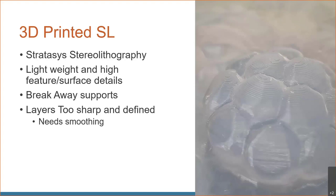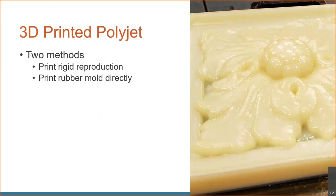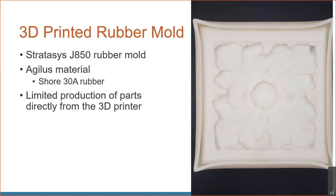For our third option, PolyJet printers offer two different approaches. We can either print a rigid master pattern to cast a mold from — like the previous two methods — or we can directly print a rubber mold that we can cast plaster straight into. That could save a whole step in the process with less to go wrong. Let's look at that rubber mold first — it's a pretty interesting approach.